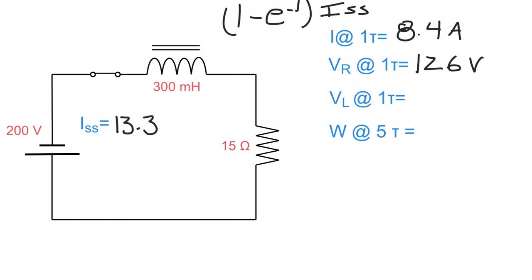We've now figured out the current at the first tau and the voltage at the resistor at the first tau. To find the voltage at the inductor at the first tau: I have 200 volts from the source, and 126 volts across the resistor. Using Kirchhoff's Law, 200 minus 126 gives me 74 volts across the inductor.